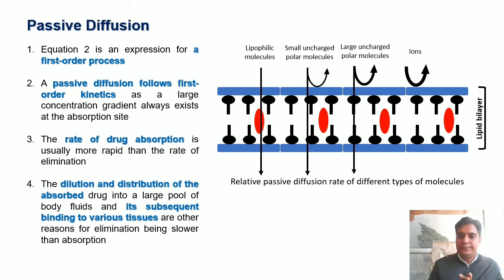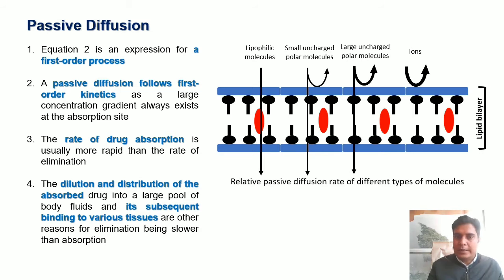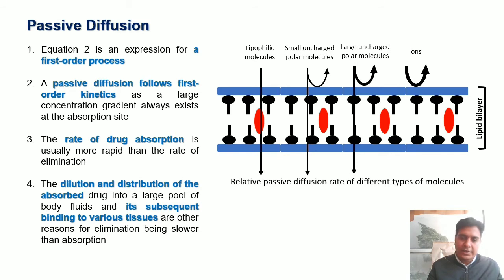Looking at the relative passive diffusion rates of different molecule types: lipophilic molecules absorb rapidly through the biological membrane. Small uncharged polar molecules may or may not absorb. Large uncharged polar molecules sometimes absorb in smaller quantities, but most will not be absorbed. Ionic drugs will not get absorbed through the biological membrane at all.